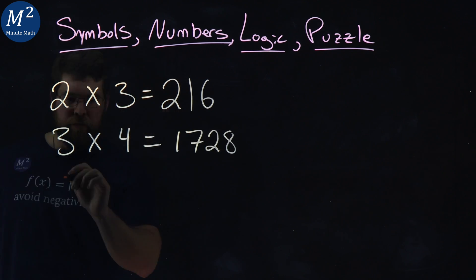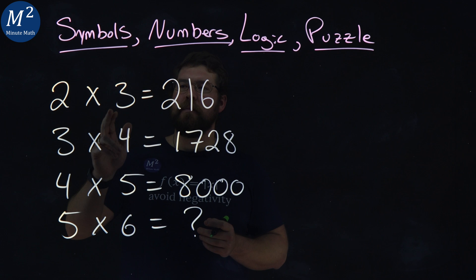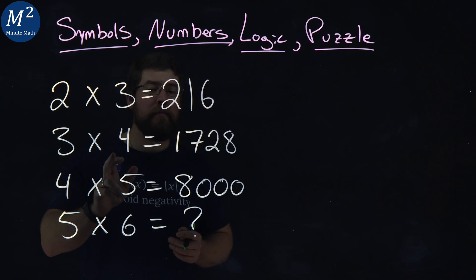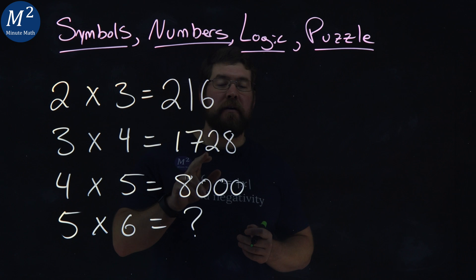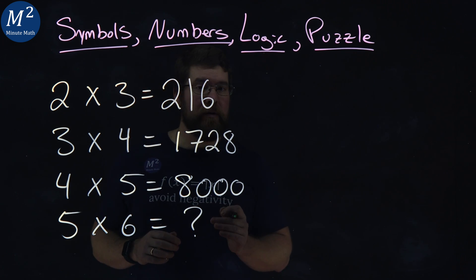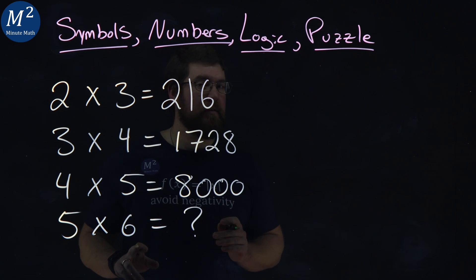Symbols, numbers, logic, puzzle. We're given 2 times 3 equals 216, 3 times 4 equals 1728, and 4 times 5 equals 8,000. With this, what is 5 times 6?